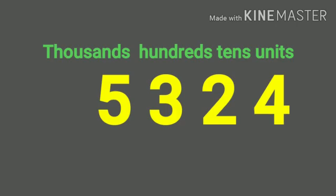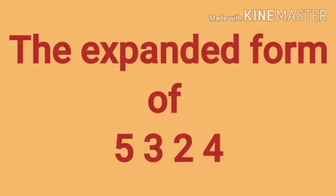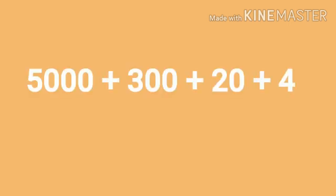Look at this number. In this number, 5 is in the thousands place, 3 is in the hundreds place, 2 is in the tens place, and 4 is in the units place. It means that the expanded form of 5324 is 5000 plus 300 plus 20 plus 4. Understand?